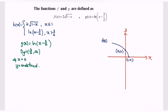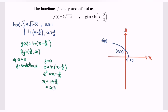Next, find the x-intercept by setting y equal to 0: 0 equals ln of bracket x minus 3 over 2. Converting to index form, e to the power 0 equals x minus 3 over 2, so x equals 1 plus 3 over 2, giving x equals 2.5. The x-intercept is (2.5, 0), or equivalently (5/2, 0). The asymptote is the vertical line x equals 3 over 2.